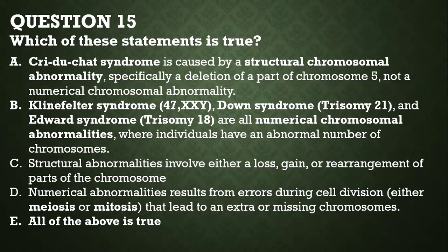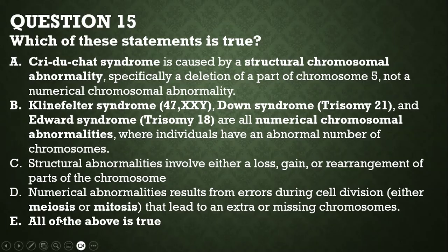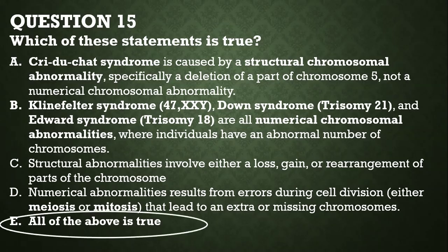Next question: which of the statements is true? Cri-du-chat syndrome is caused by a structural chromosomal abnormality — specifically a deletion of part of chromosome 5 — and is not a numerical abnormality. Klinefelter's syndrome, Down syndrome, and Edwards syndrome are all numerical chromosomal abnormalities where individuals have an abnormal number of chromosomes. Structural abnormalities involve a loss, gain, or rearrangement of parts of the chromosomes, while numerical abnormalities result from errors during cell division (meiosis or mitosis). All of the above are true.